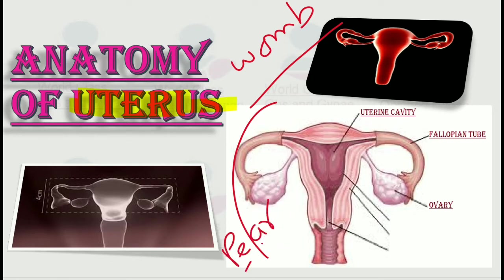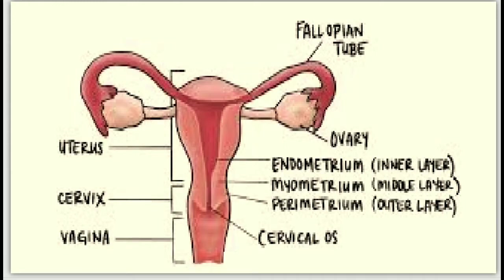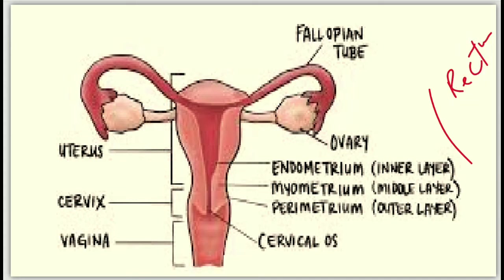It is a pear-shaped muscular organ of the female reproductive system, as you can see here. It is located between the bladder and the rectum — on the front side we have the bladder, and on the back side we have the rectum. So what is the main purpose of this uterus?